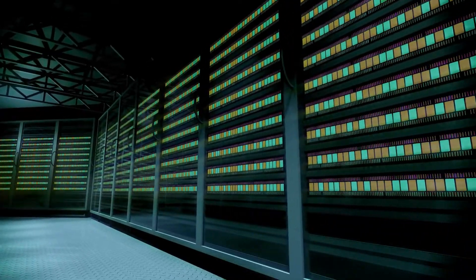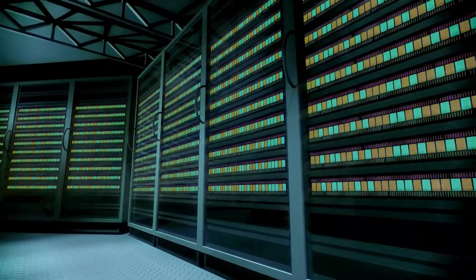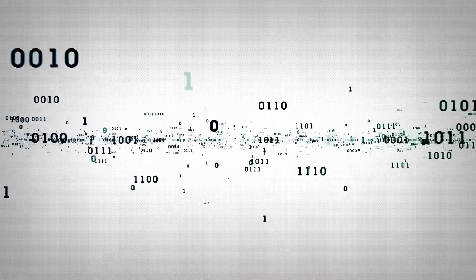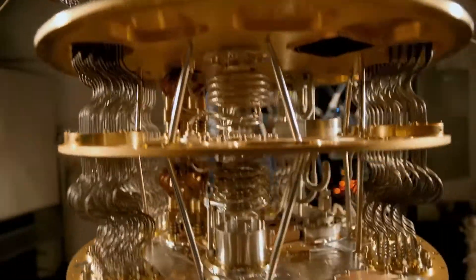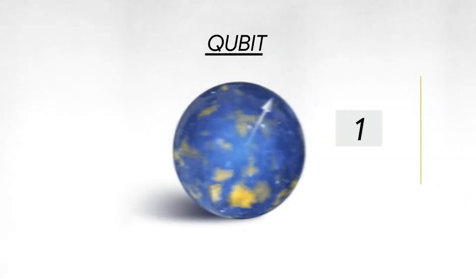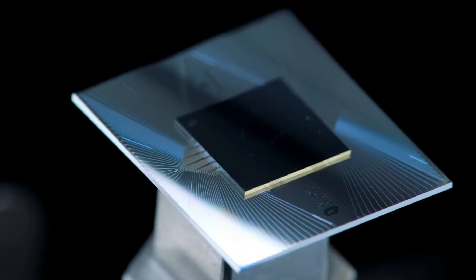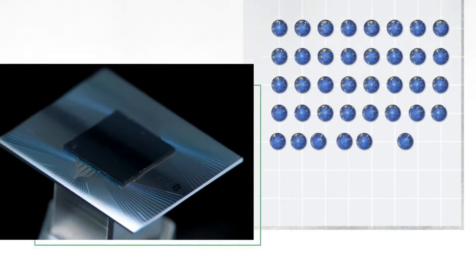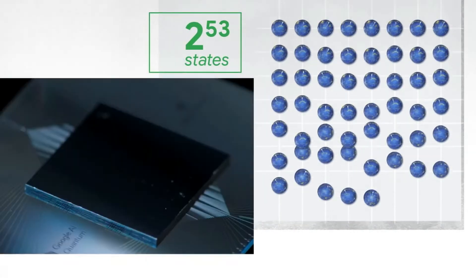Today's computers use bits, a stream of electrical or optical pulses representing ones or zeros. Everything from your tweets and emails to your iTunes songs and YouTube videos are essentially long strings of these binary digits. A qubit, or quantum bit, is the basic unit of quantum information, which are typically subatomic particles such as electrons or protons. To be clear, quantum computers don't use transistors, but subatomic particles to perform calculations and store information.